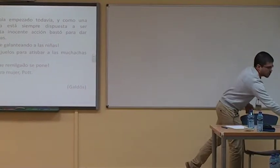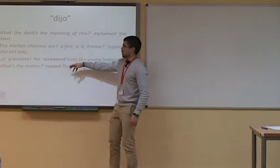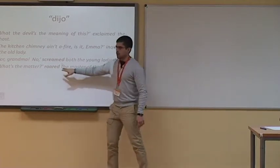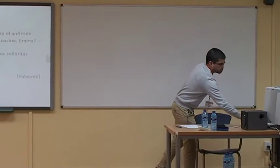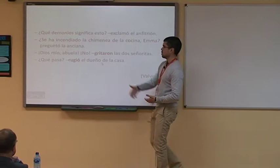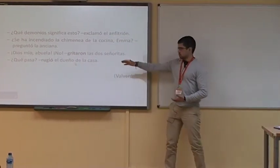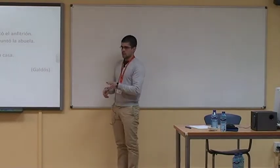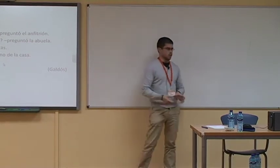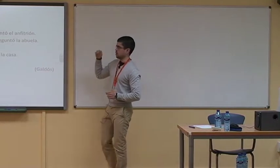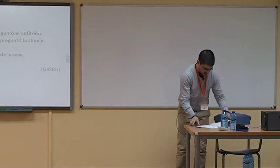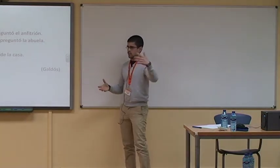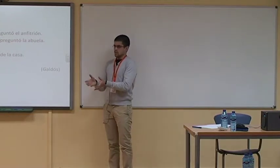Hay veces en que Galdós sí utiliza verbos de habla pero emplea dijo. Tenemos aquí la dicotomía de la que hablaba antes: las mujeres hablan de una manera y los hombres de otra. Las young ladies screamed y sin embargo su padre roars. Valverde mantiene esa posición más o menos: gritaron y rugió. Desde luego rugió desprende unos matices bastante más impetuosos que gritaron. Y Galdós únicamente utiliza dijeron y dijo para trasladarlo al español. Si sumamos los 727 ejemplos sin verbo y los 243 de dijo, son 930 ejemplos de los 2.168, casi la mitad, en los que no se traduce o se traduce por un verbo no específico y se pierden matices.